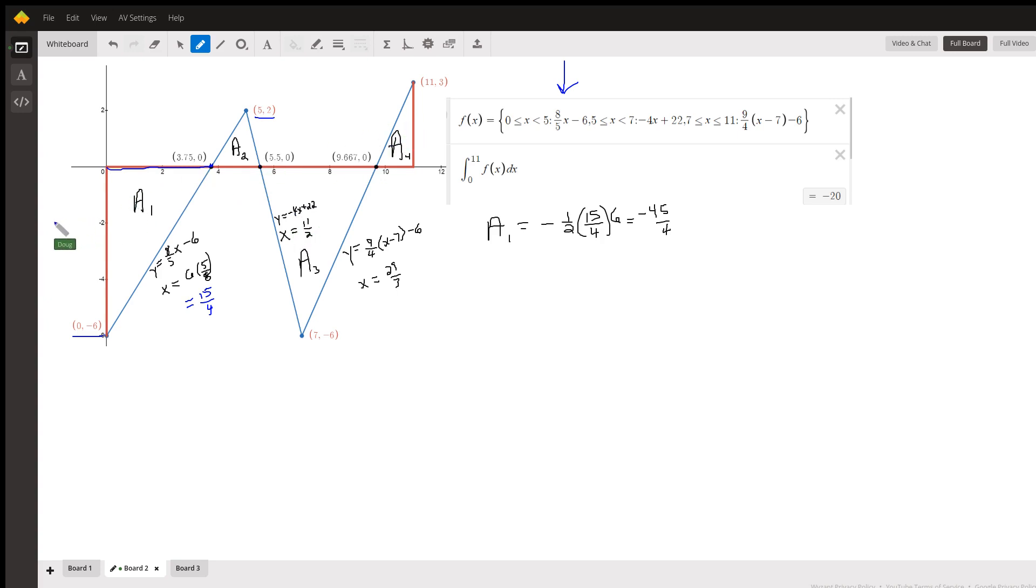Any area of the x, that's areas a sub 1 and a sub 3. And a sub 2 and a sub 4 will be positive areas. You can see that if we just evaluate the piecewise function using the definite integral function on Desmos.